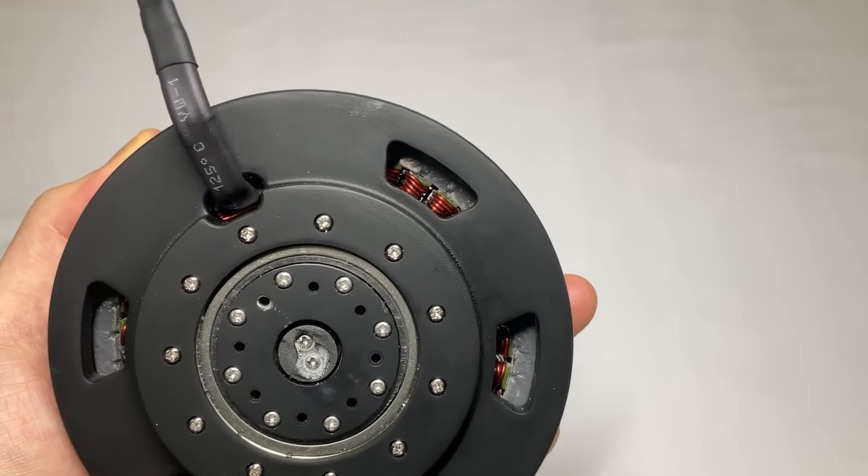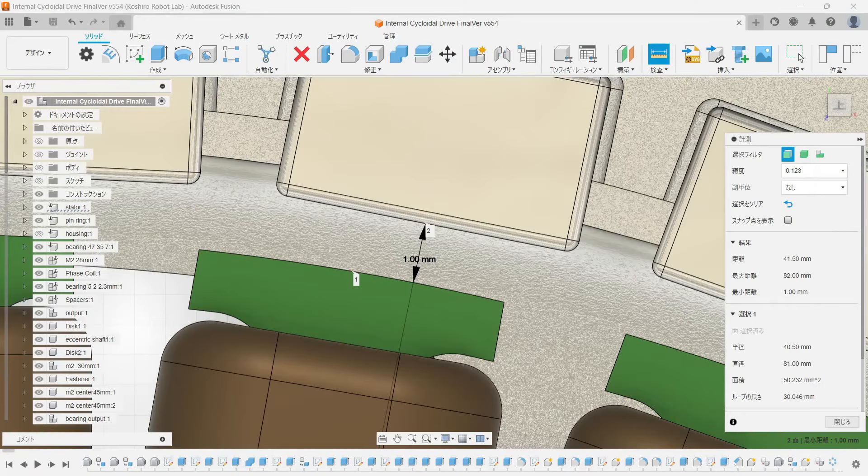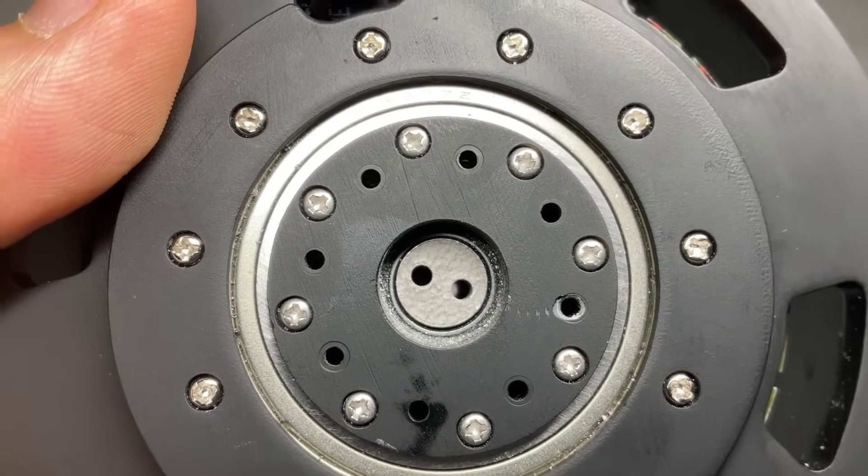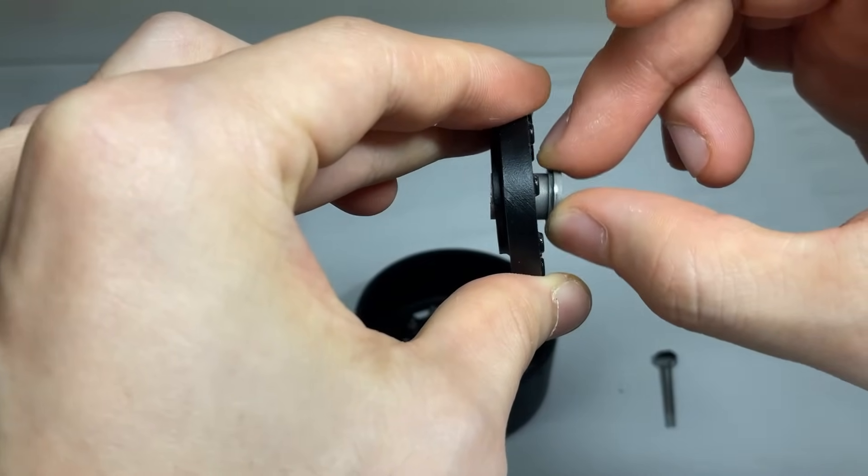The permanent magnets are sticking to the stator, so there's no rotation at all. I designed it so there would be about a 1mm gap between the magnets and the stator, but I allowed too much clearance between the shaft and the bearings. As a result, the shaft and rotor ended up tilting.